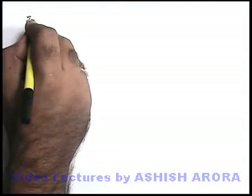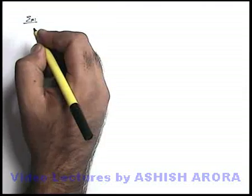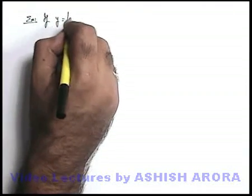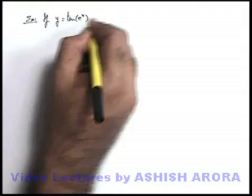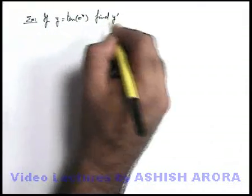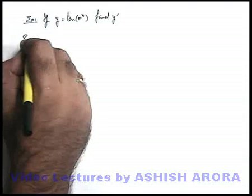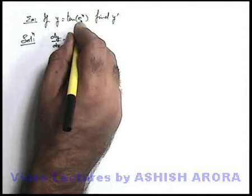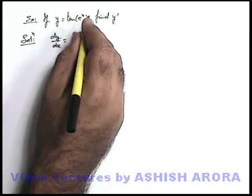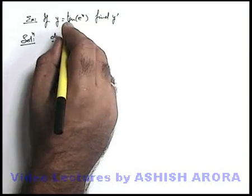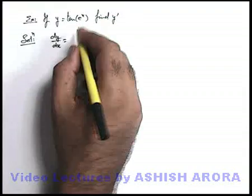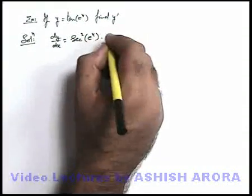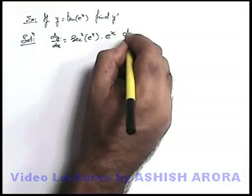Let us take another example to understand this better. If we are given y is equal to tan of e to the power x, and we are required to find y prime. The internal function is e to the power x, so I suppose e to the power x is t. The differentiation of tan t is sec squared, so it is sec squared of e to the power x, multiplied by the differentiation of t, which is e to the power x. This is the answer.